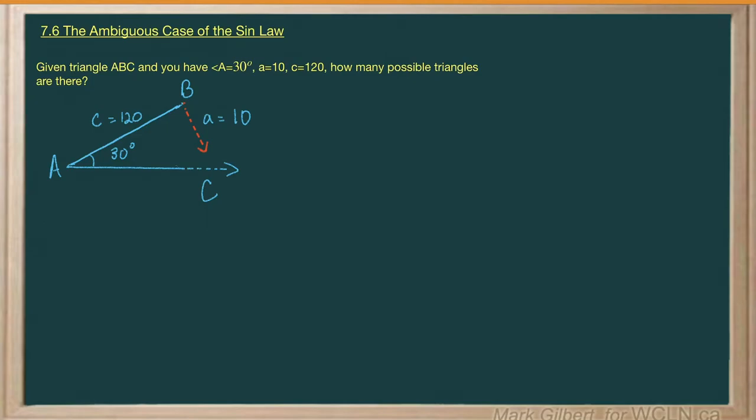Alright, now one thing to note, I've given you a diagram, but we don't know where the point or the angle C is. So what we need to do is we need to find the height of the triangle. Let me draw that in. So there's the height.